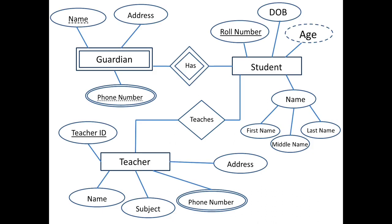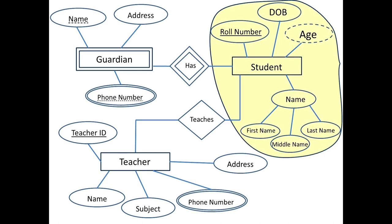Here is an example of an Entity Relationship Diagram. We have three Entity Sets: Student, Guardian, and Teacher. Guardian is a Weak Entity Set which is existence dependent on the Student Entity Set. Student and Teacher are Strong Entity Sets and are related to each other. For the Student Entity Set, Roll Number is a Key Attribute. Name is a Composite Attribute that can be divided into three parts: First Name, Middle Name, and Last Name.